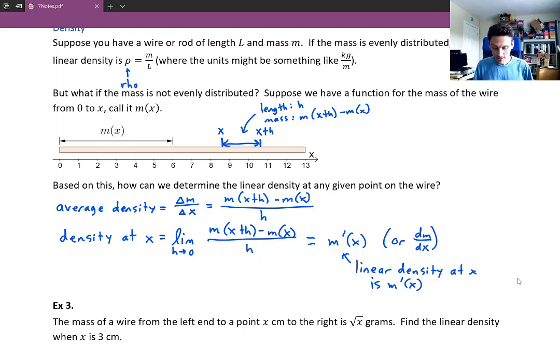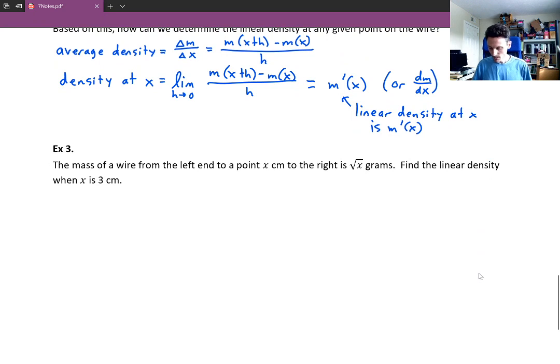You know, it's a place where you may not think that the derivative is going to arise and it just pops out of the analysis. All right, so then, for example 3, it says the mass of a wire from the left end to a point x centimeters to the right is the square root of x grams. Find the linear density when x is equal to 3 centimeters.